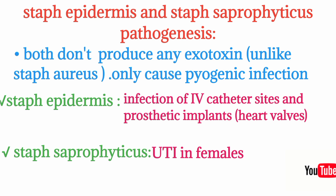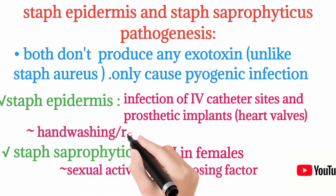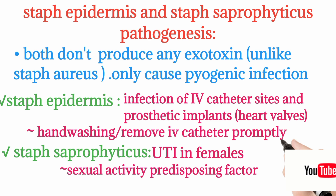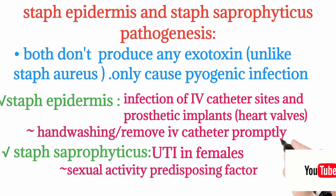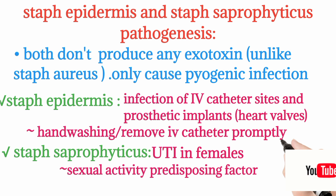To prevent Staph epidermidis infection — which is commonly present on the skin — proper hand washing and prompt removal of IV catheters are recommended, since prolonged catheter placement can cause infection. Staph epidermidis can travel from the skin through IV catheters into the blood, causing infection of prosthetic implants and catheter sites. Staph saprophyticus, found in the genital tract, causes UTI in young females.